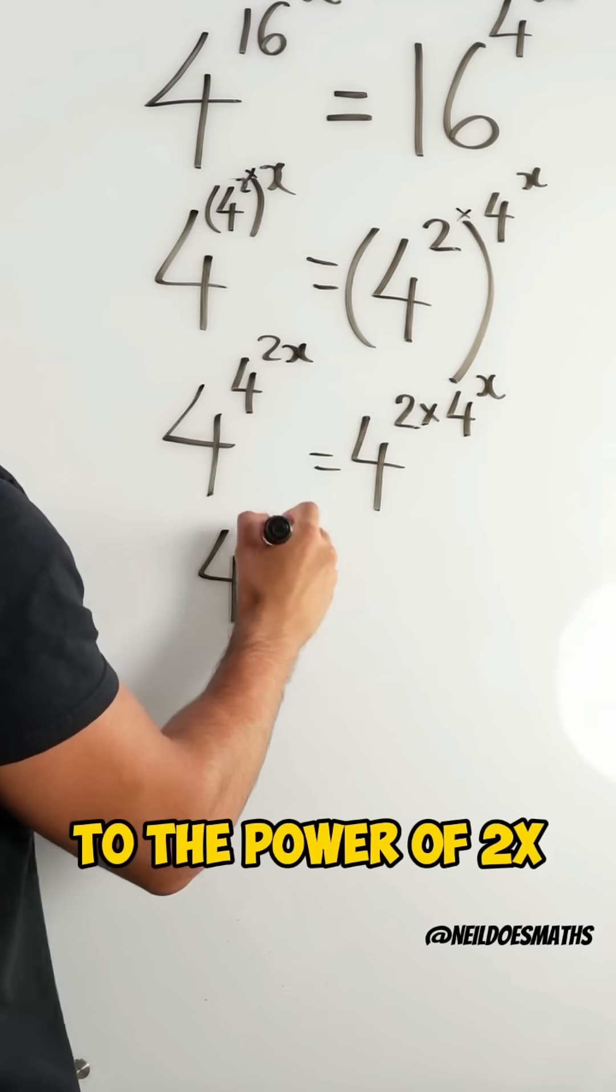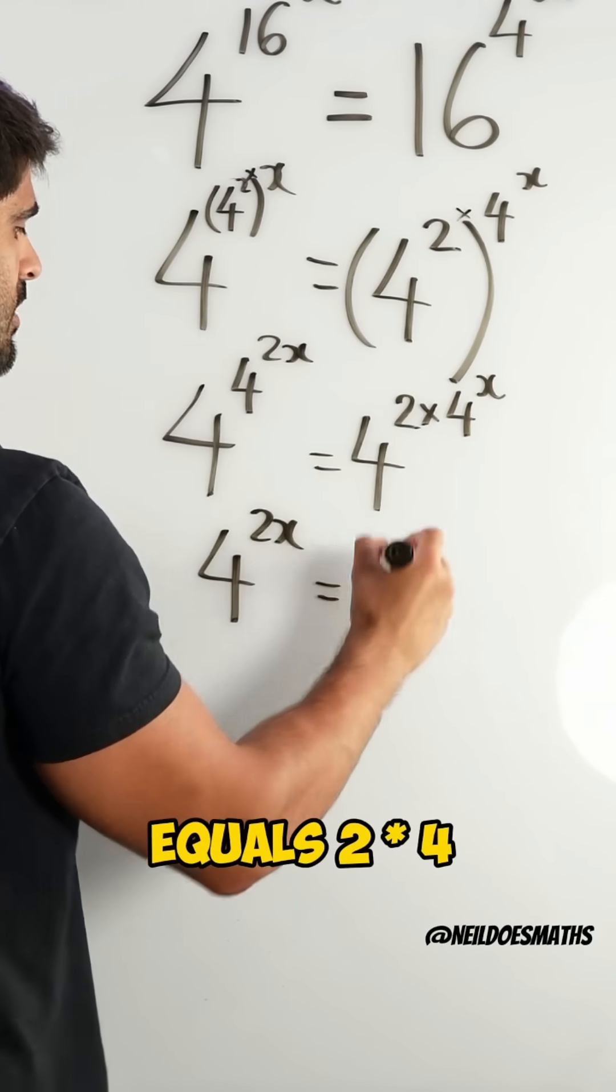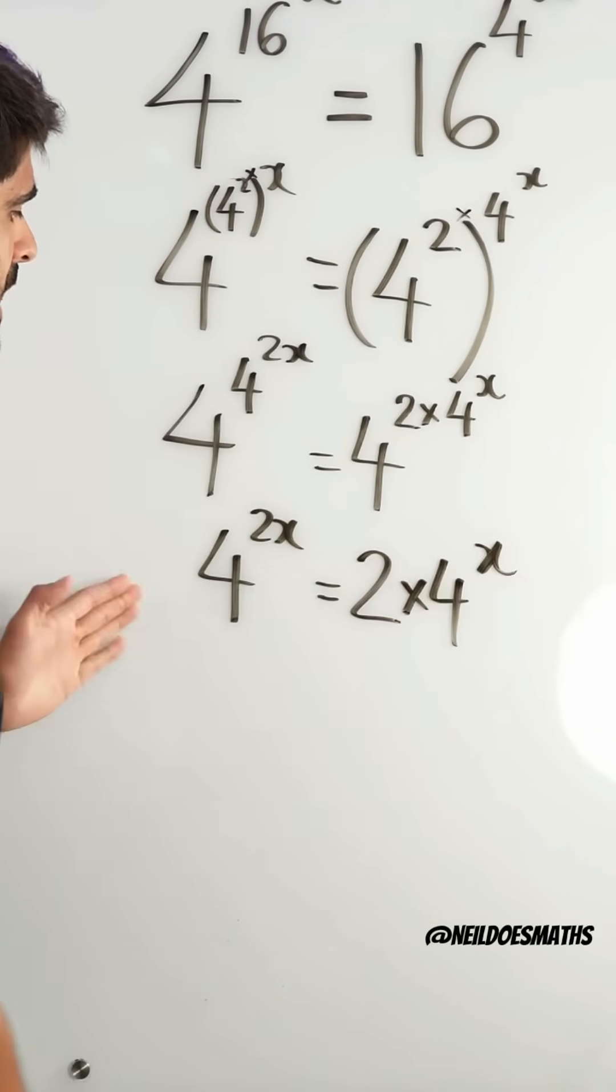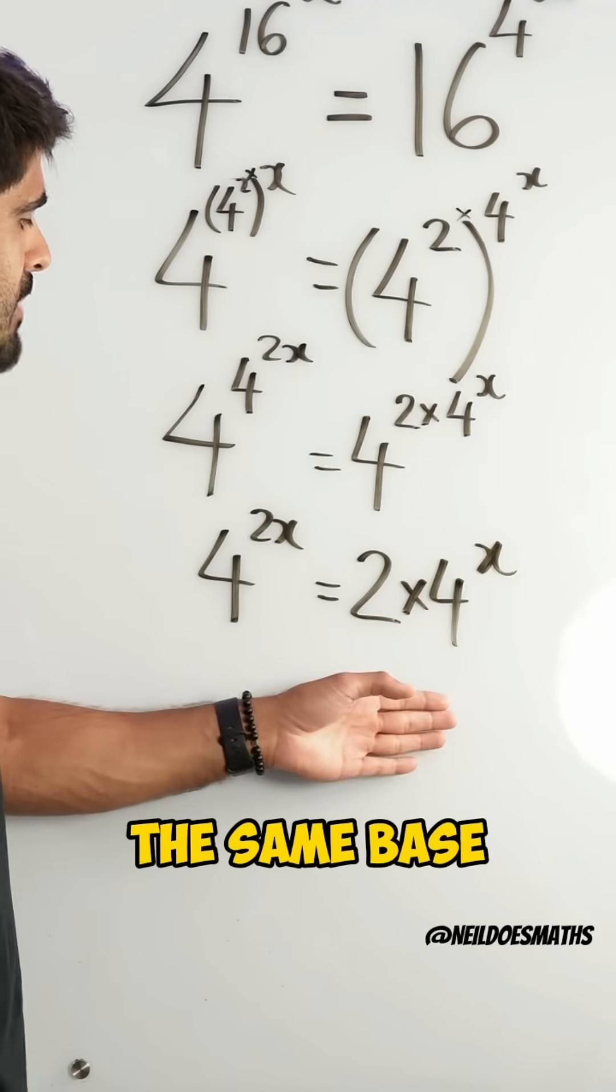So the powers must be the same. So we're left with 4 to the power of 2x equals 2 times 4 to the power of x. Now, the last thing we need to do is, again, change everything so that they have the same base.